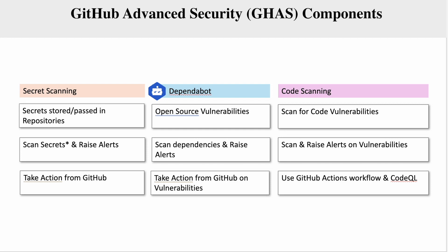Third is Code Scanning. It scans for code vulnerabilities and raises alerts on vulnerabilities that are identified. You can use GitHub Action Workflow and CodeQL to perform sophisticated code scanning by integrating other security tools, including non-GitHub security tools.